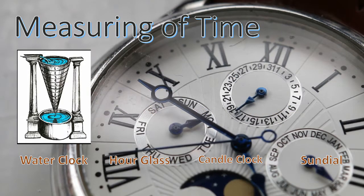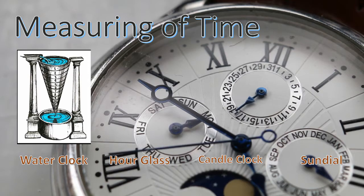The water clock is not accurate because of changes in temperature. If it's very cold, the amount of water that flows down through the orifice of the device flows slower, and if it's very hot, some water will actually evaporate.